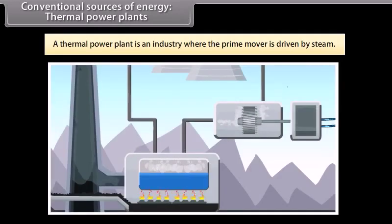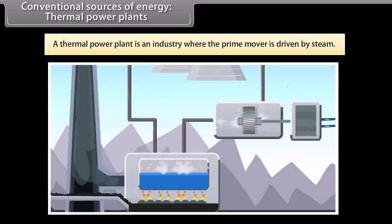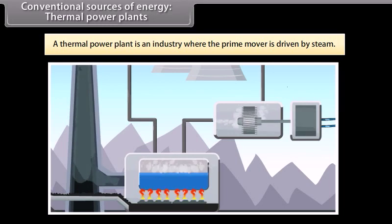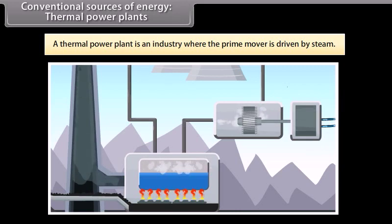Conventional sources of energy: Thermal power plants. A thermal power plant is an industry where energy is generated by steam. Here, water is heated and then turned into steam. This in turn spins a steam turbine, driving an electrical generator. After it passes through the turbine, the steam is condensed in a condenser and recycled to where it was heated.